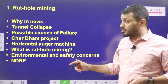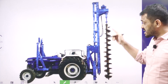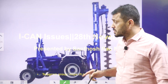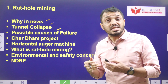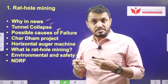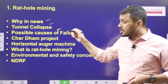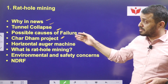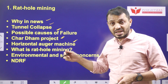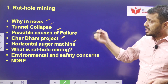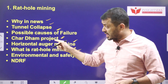In this video we will discuss why rat hole mining is in the news, what this auger machine is and how it works. We will cover how this tunnel collapsed, what the possible causes are, where this tunnel is located, which two areas it connects, the length of the tunnel, and the significance of the Chardam project. We will also discuss the horizontal auger machine which has failed, leading us to choose rat hole mining, and the environmental and safety concerns regarding rat hole mining.